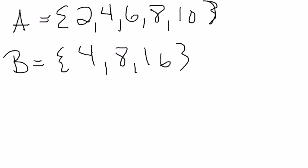So here you see two different sets. We have set A and set B. Set A has the elements 2, 4, 6, 8, and 10. Whereas set B has the elements 4, 8, and 16.